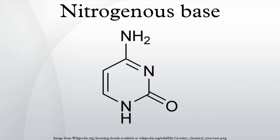Uracil is only present in RNA, replacing thymine. Pyrimidines include uracil, thymine, and cytosine. They have a single ring structure. Purines include adenine and guanine. They have a double ring structure.